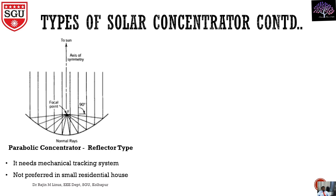The main drawback is that based on the movement of the sun we need a mechanical tracking system to move this. That is the main drawback. But this is preferable for small residential houses — we can use this parabolic concentrator type.